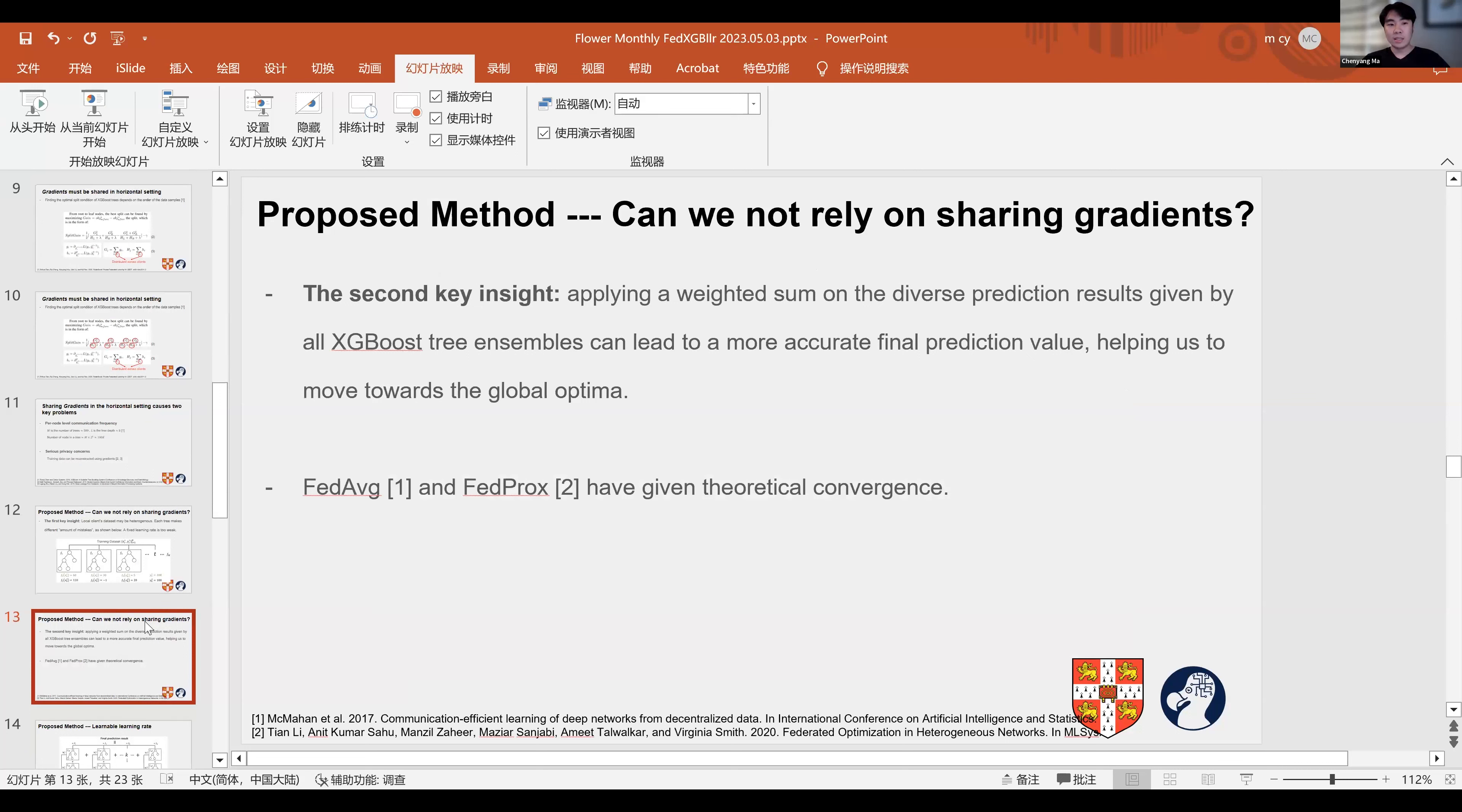Our second insight is that data heterogeneity causes the trained XGBoost model on different clients' local data sets to converge to local optima that are far away from each other. Consequently, given an unseen data sample, these XGBoost tree ensembles also produce different prediction outcomes. However, among all tree ensembles, some can give more accurate predictions because the underlying distribution may be closer to some distributions. So we may want to apply a weighted sum on all tree ensembles' prediction outcomes.